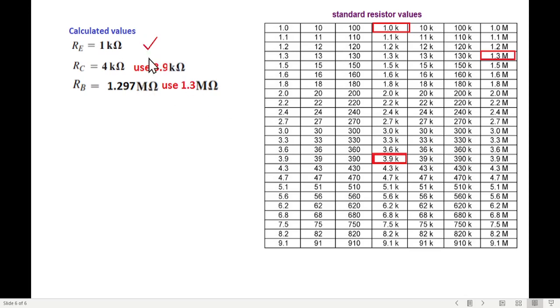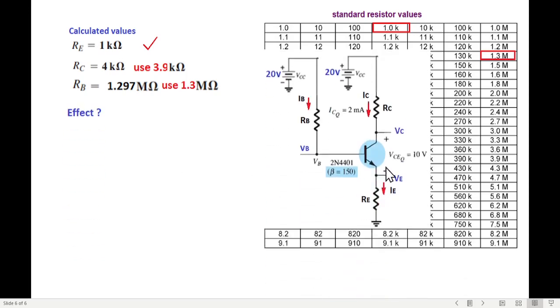Now when we use these values, since we took approximate different values from the calculated, then what difference does it make to our circuit parameters? For that we use a simple verification technique. For example, in the RC collector-emitter circuit, if we use this resistance, how much does the current change?